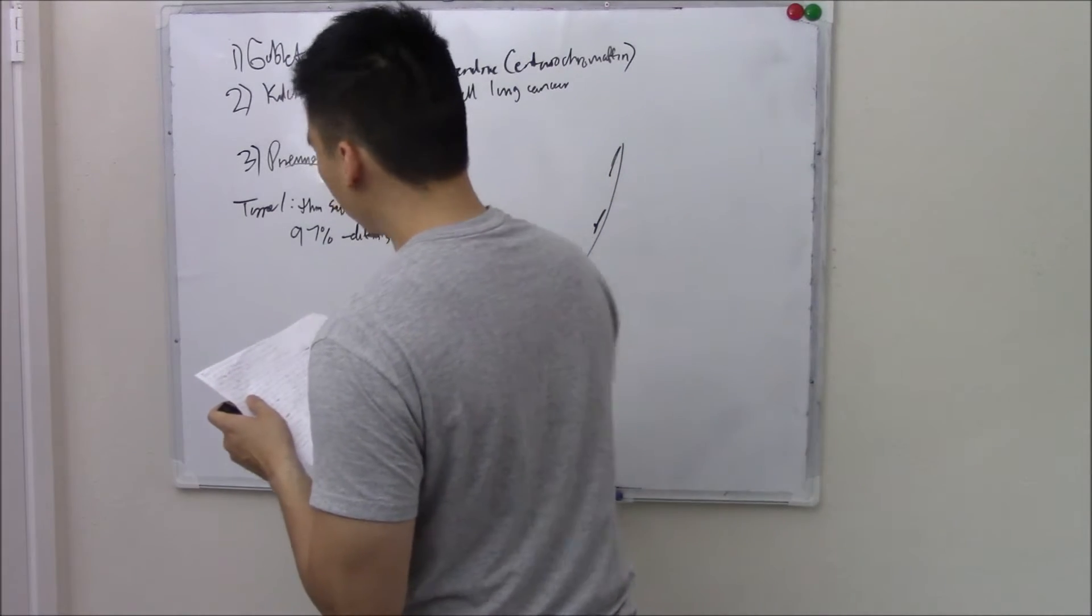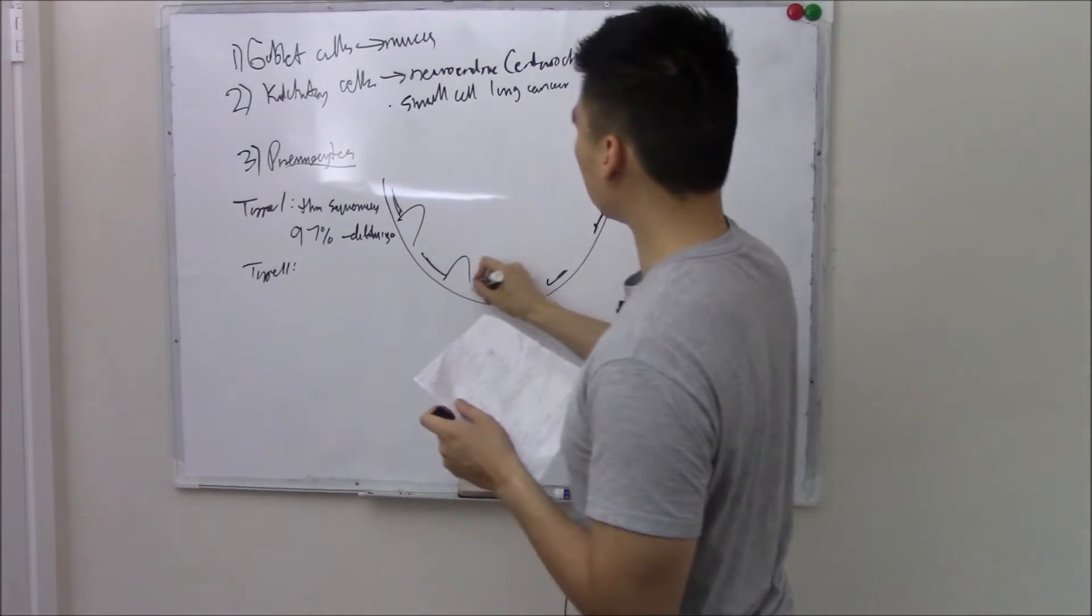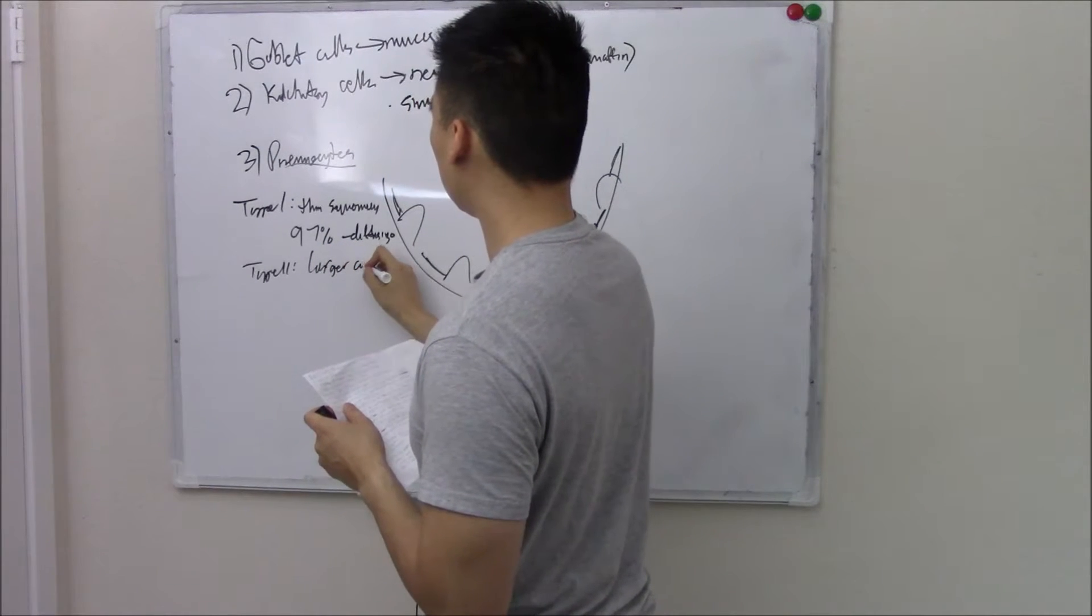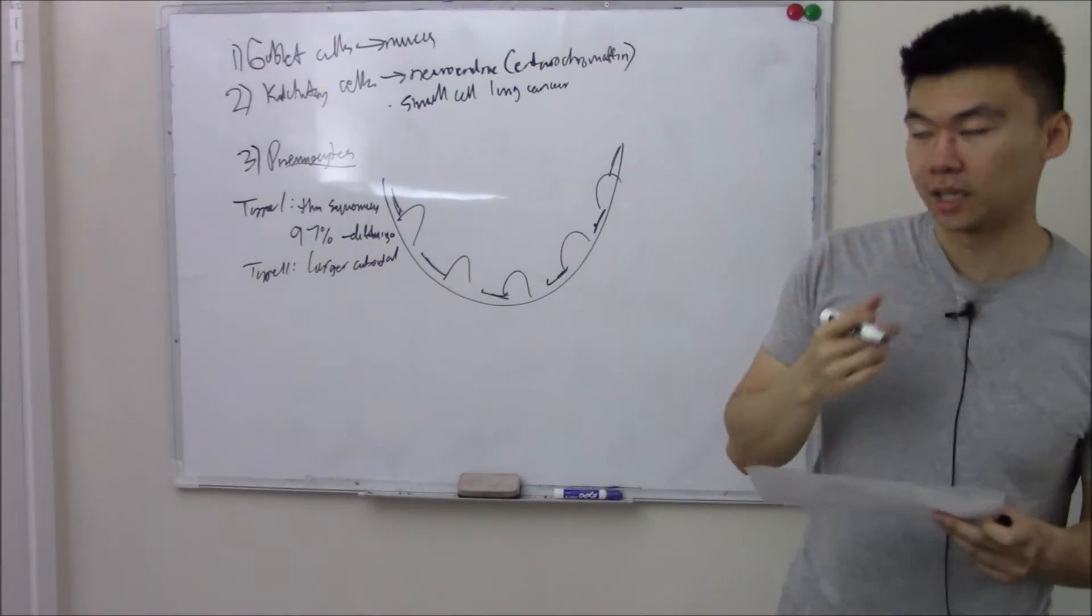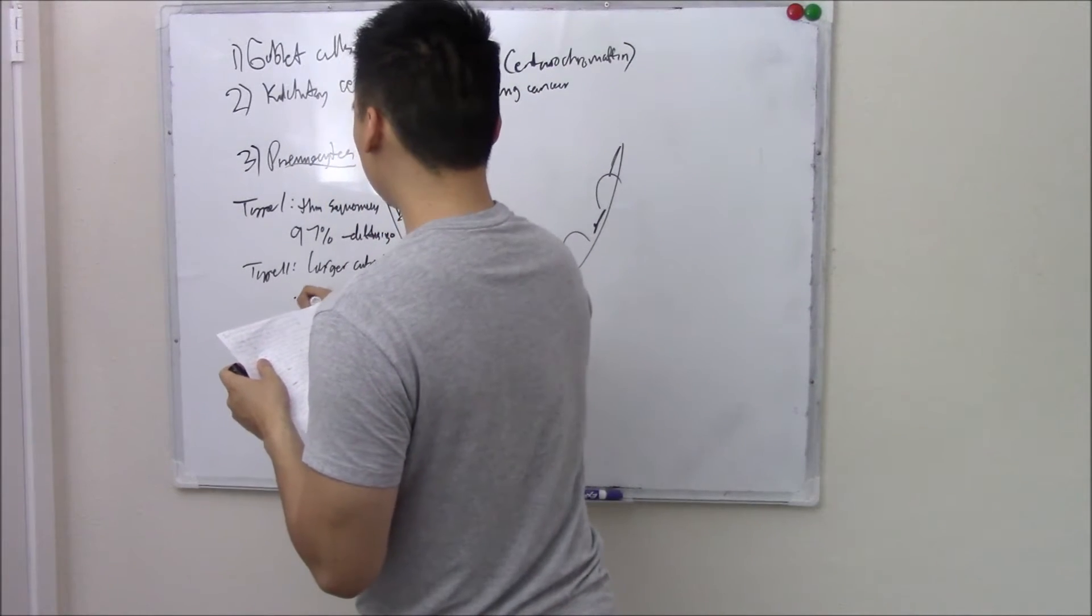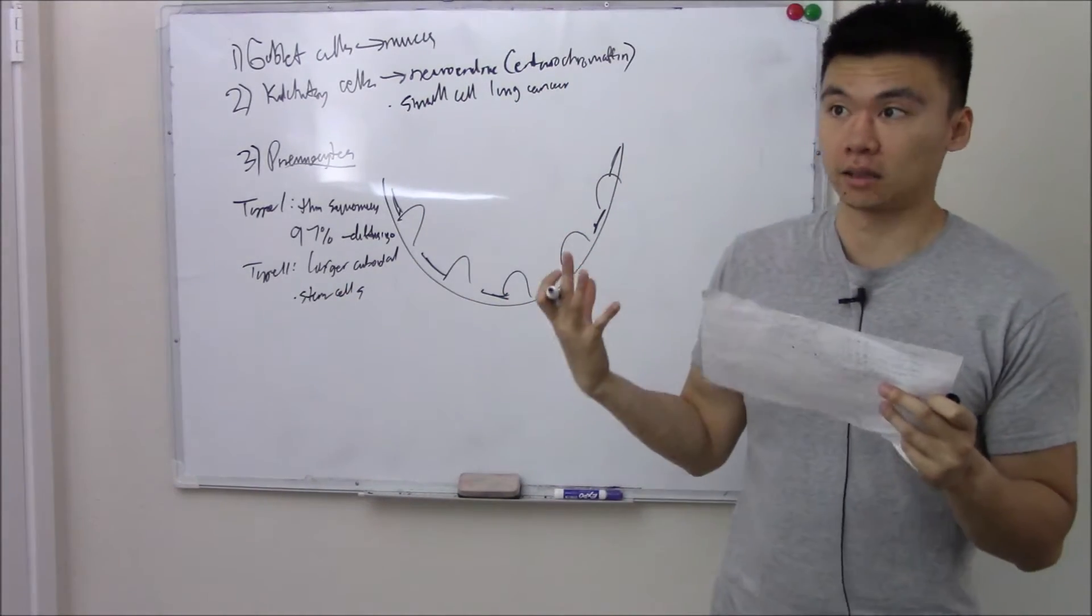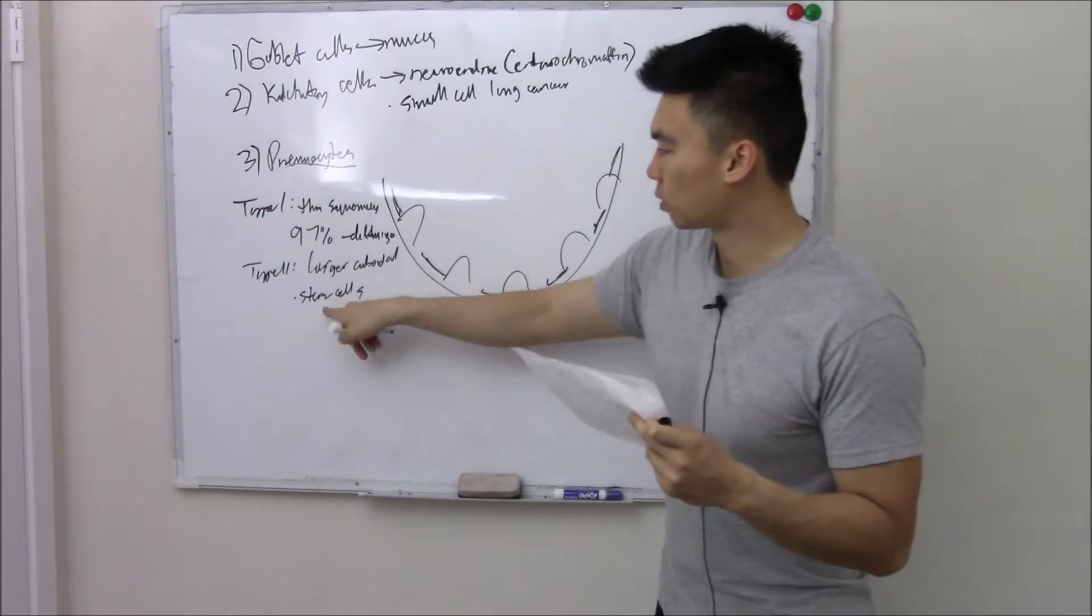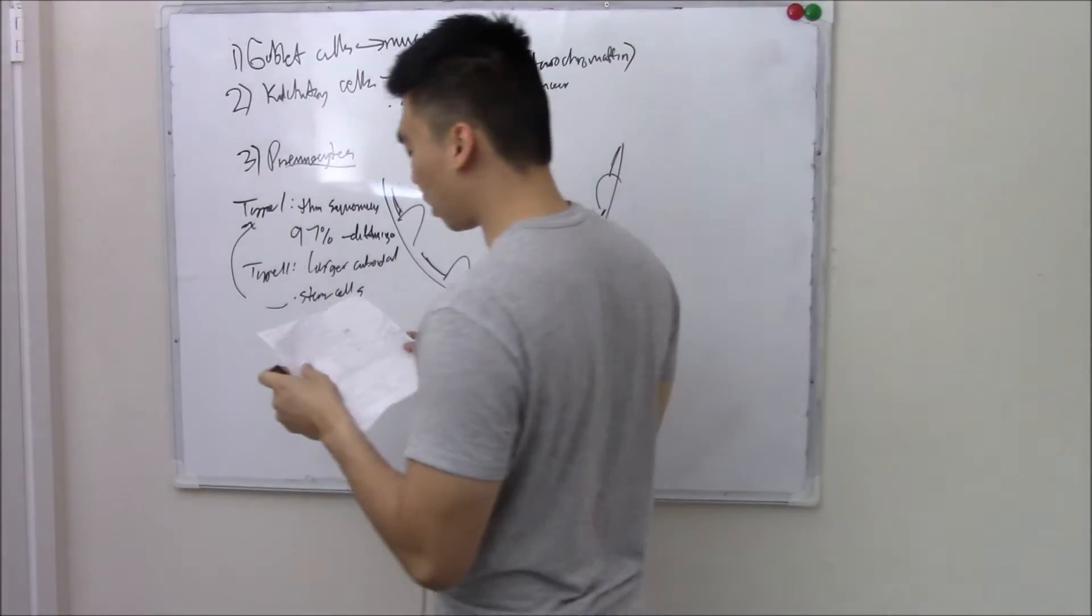Type 2 are kind of your support cells, a little bit larger, cuboidal. You should be able to tell them apart on imaging. The larger ones are type 2. They're support cells because they can become stem cells. They'll proliferate in lung damage. When your lungs are damaged, they proliferate, and if your type 1 dies, they will proliferate and become more type 1.